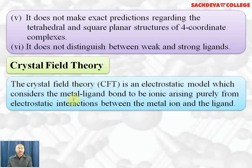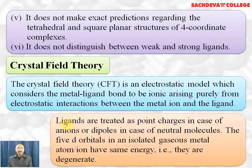Crystal Field Theory (CFT) is an electrostatic model which considers the metal-ligand bond to be ionic, arising purely from electrostatic interactions between metal ions and ligands. Ligands are treated as point charges in the case of anions and as dipoles in the case of neutral molecules. All neutral molecules that act as ligands are polar, so the negative end of the dipole forms the coordinate bond via a lone pair of electrons.